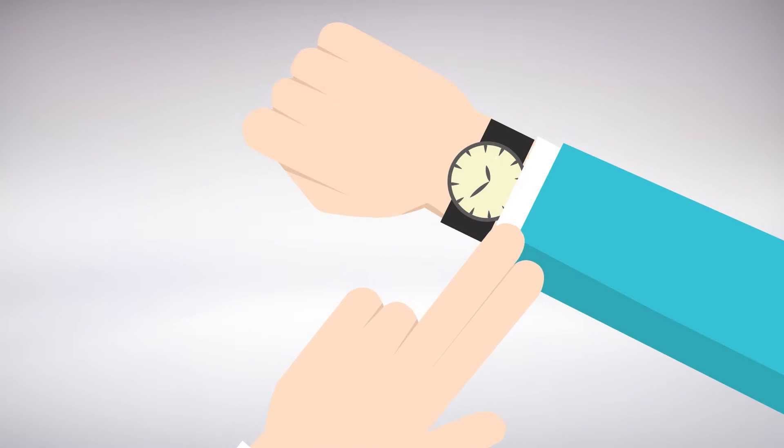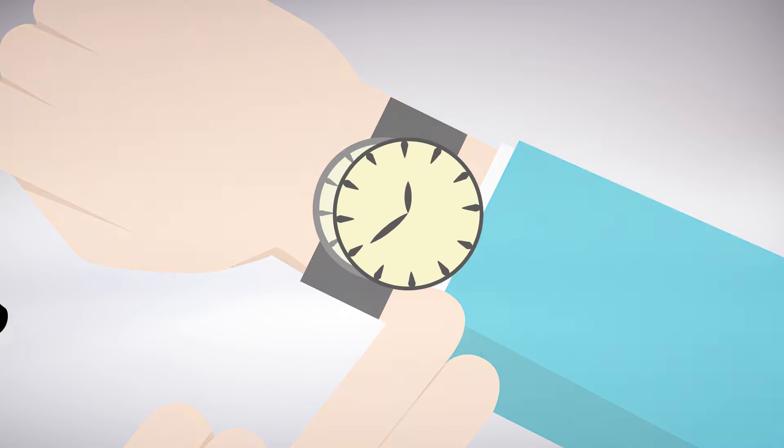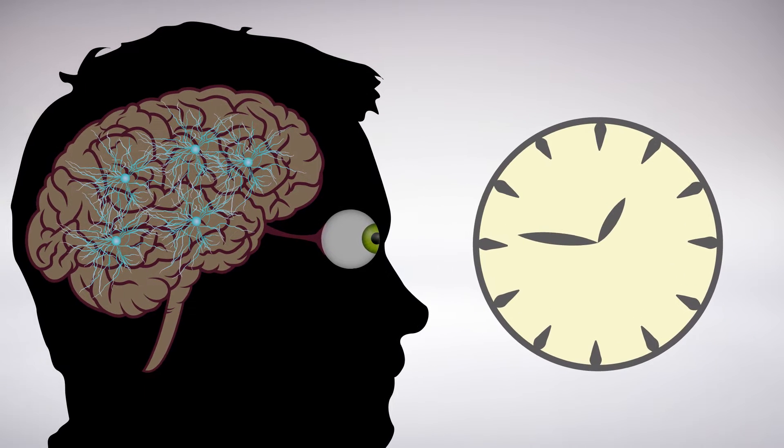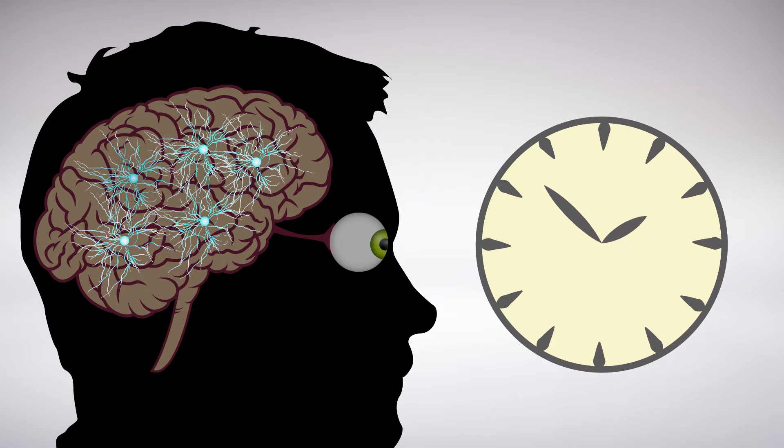When you want to know what time it is, a quick glance at your watch is all you need. Even though there's only a slight difference in angle, cells in your brain respond differently to the orientation of a clock hand pointing at 3 versus 4.